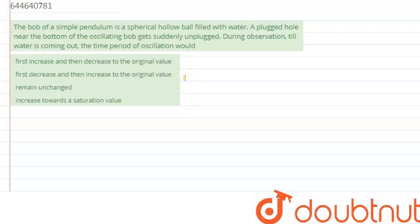Hello everyone, so we are given with a question which says: the bob of a simple pendulum is a spherical hollow ball filled with water. A plugged hole near the bottom of the oscillating bob gets suddenly unplugged during observation, till water is coming out.